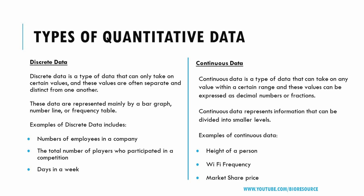Continuous data is a type of data that can take on any value within a range, and these values can be expressed as decimal numbers or fractions. Continuous data represents information that can be divided into smaller levels. Examples include the height of a person, Wi-Fi frequency, market share price, etc.